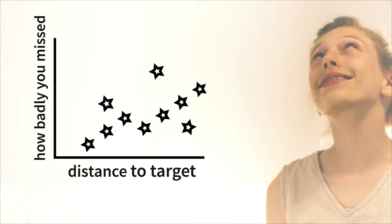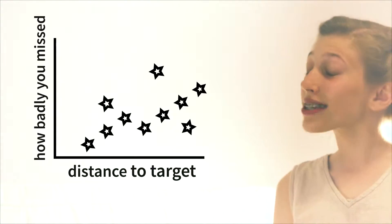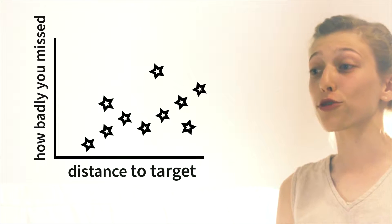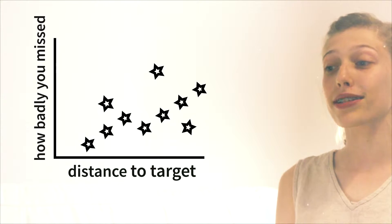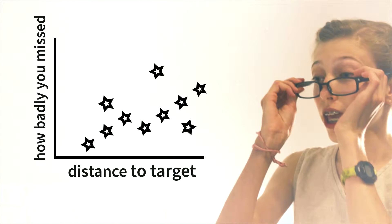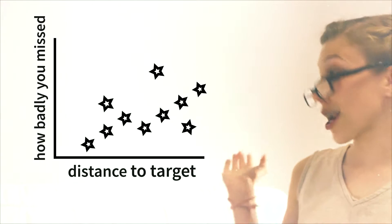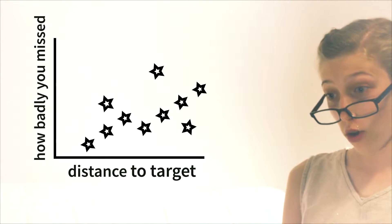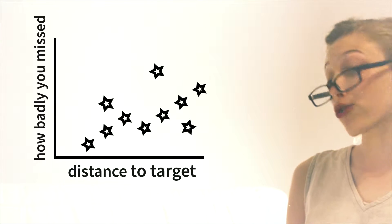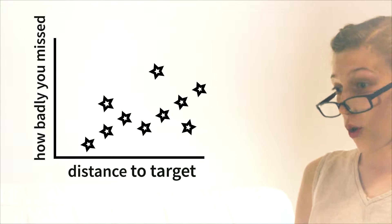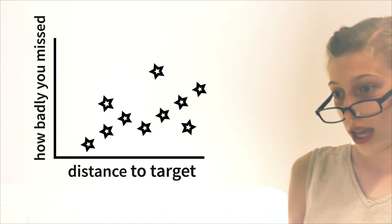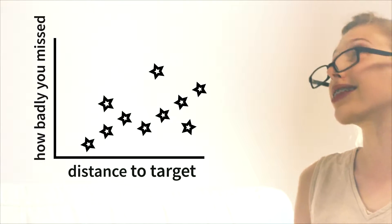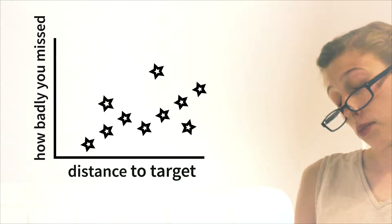A scatter what? A scatter plot — a type of plot using coordinates to display values. For example, I made a scatter plot for your shooting. There's a positive correlation shown on this graph, because the closer you are to the target, the more accurate your shots become. The further away you are, the less accurate they become.